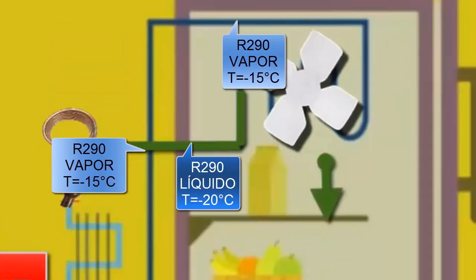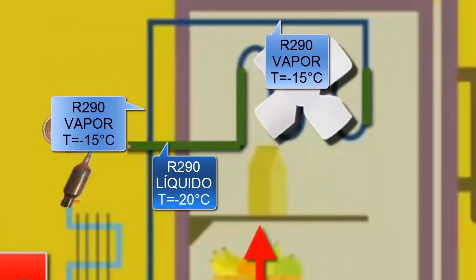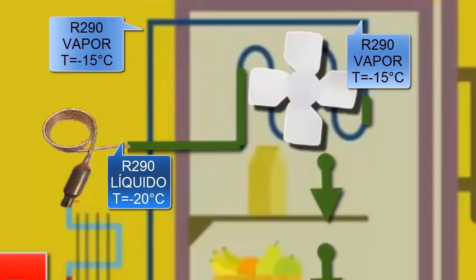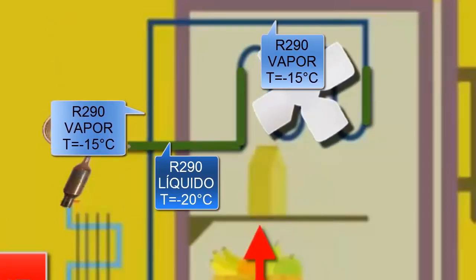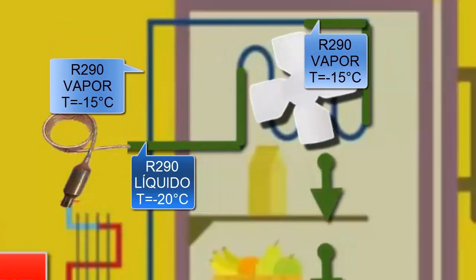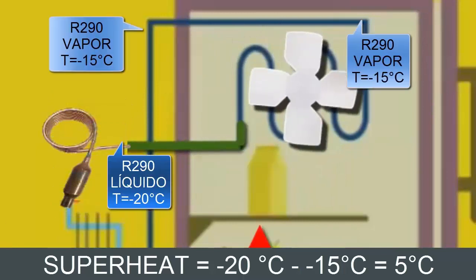For this case, let's assume that the temperature of the R290 refrigerant in a gaseous state at the evaporator outlet is minus 15 degrees Celsius. This means that the R290 refrigerant goes from minus 20 degrees Celsius to minus 15 degrees Celsius, thus, in this equipment, the superheating is 5 degrees Celsius.